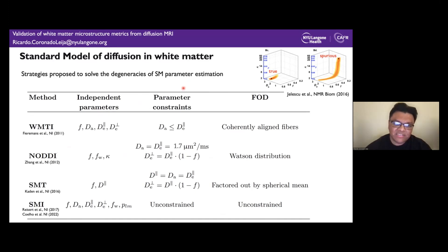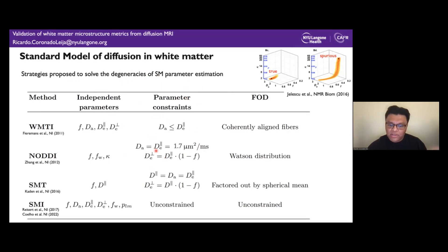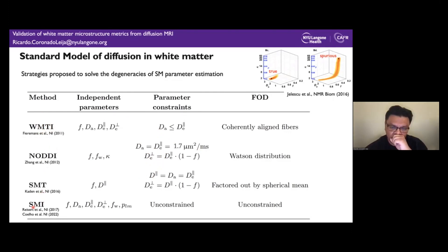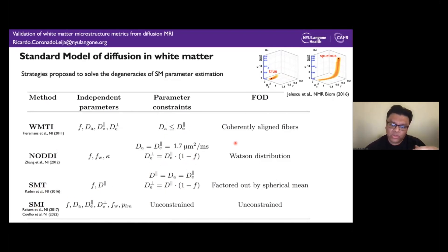Several strategies have been proposed to solve this degeneracy. However, the majority of methods apply some constraints. These include WMTI, NODDI, SMT, and SMI — with only SMI not applying any constraint, as the others heavily rely on constraints either on the parameters or the FOD.